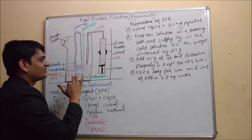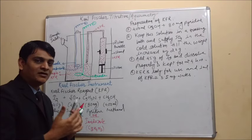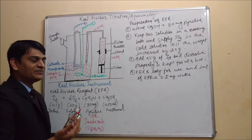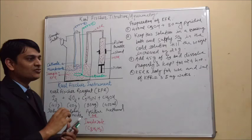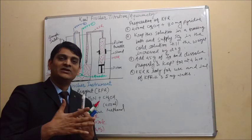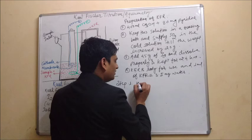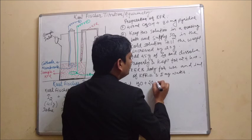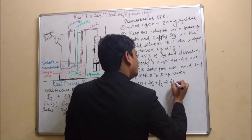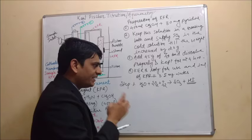During titration certain changes occur. The end point determination is done by coulometry — since there is an anode and cathode, current flow is measured and monitored. In step 1, water molecule reacts with SO₂ plus I₂ to give SO₃ plus HI. HI means H⁺ and I⁻.